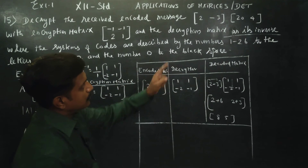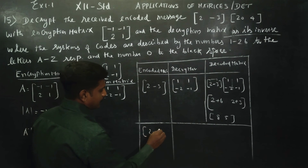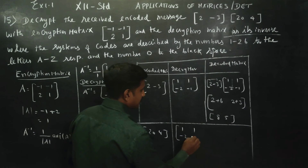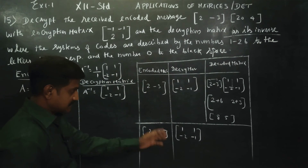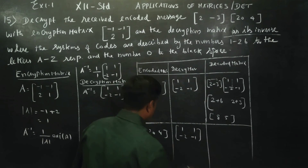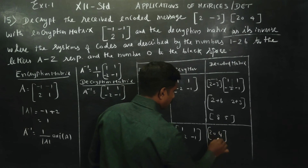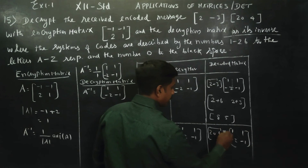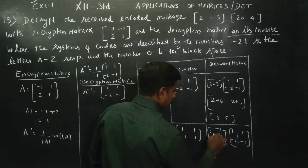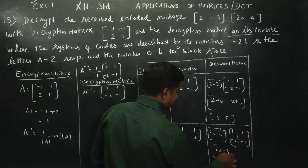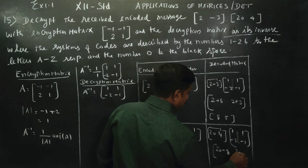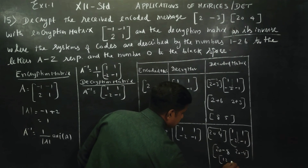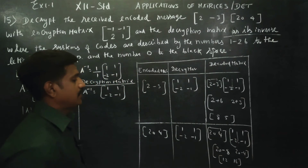The next encoded matrix is 20, 4. Applying the decryption matrix: multiply 20, 4 by 1, 1, minus 2, minus 1. We get 20 minus 8 equals 12, and 20 minus 4 equals 16. Therefore the decoded result is 12 and 16.